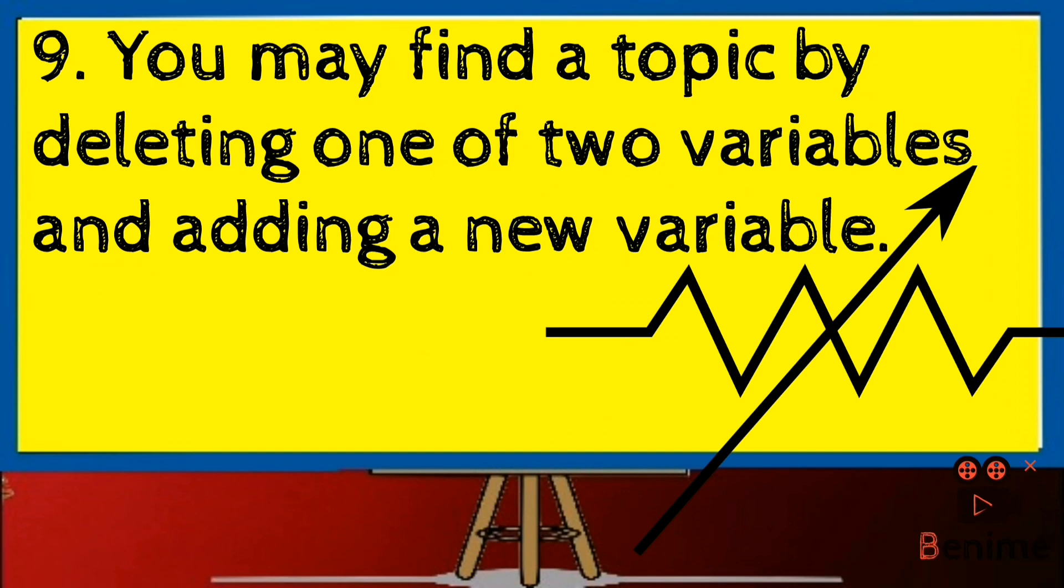Number nine: You may find a topic by deleting one of two variables and adding a new variable. Suppose you have found research on the relationship of the price of gold to the price of oil. Think about studying the relationship of the price of gold to the rate of rain in India, for example.